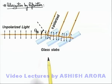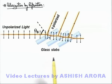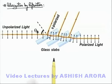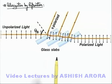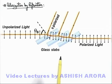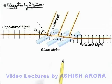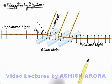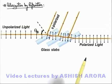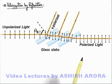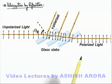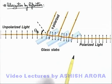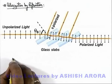So in series, as the light ray passes through these slabs, all the oscillation components of the electric field which are perpendicular to the plane of incidence are removed. The final light coming out of the pile of slabs will be plane polarized light, having vibrations of the electric field in the plane of incidence.